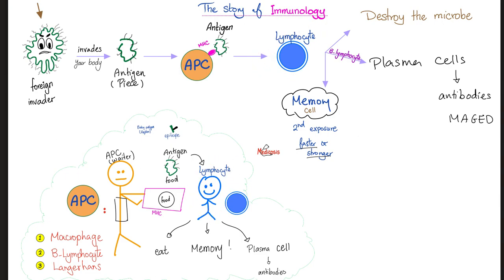T-lymphocyte has many options: we can destroy the bacteria, we can activate B-lymphocytes so they can class switch, mature, and become plasma cells to secrete antibodies such as IgM, IgA, IgG, IgE, or IgD.